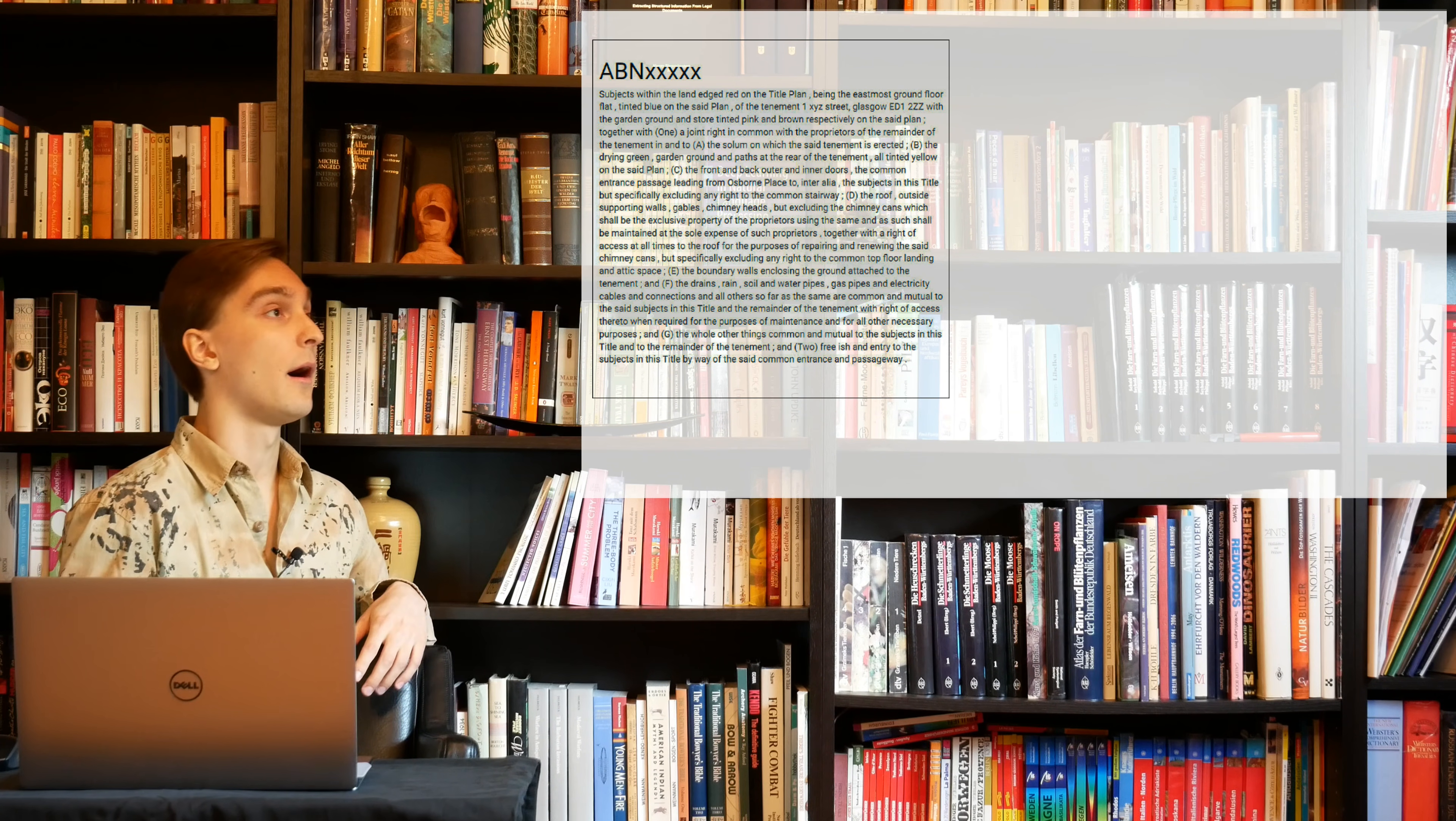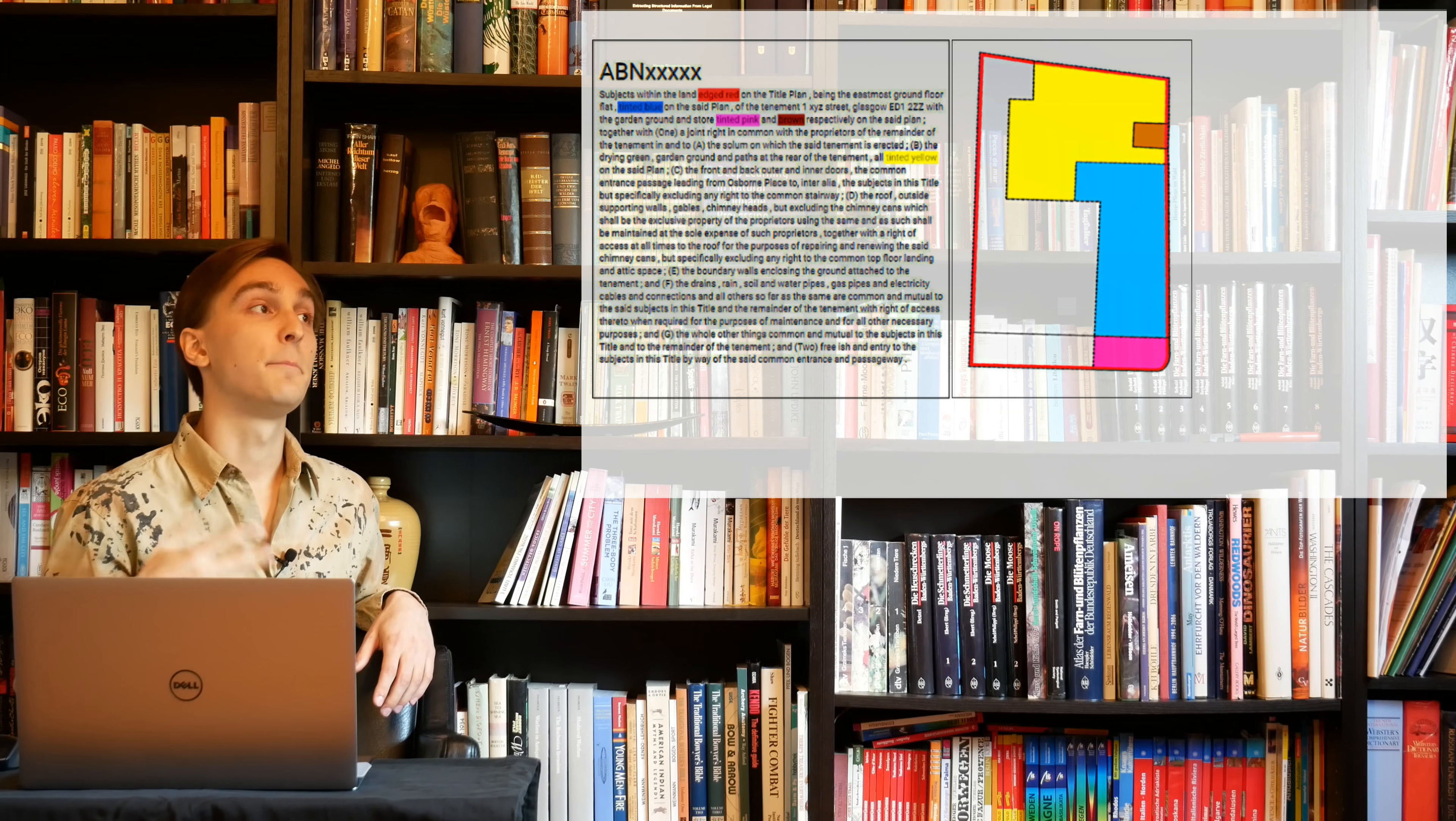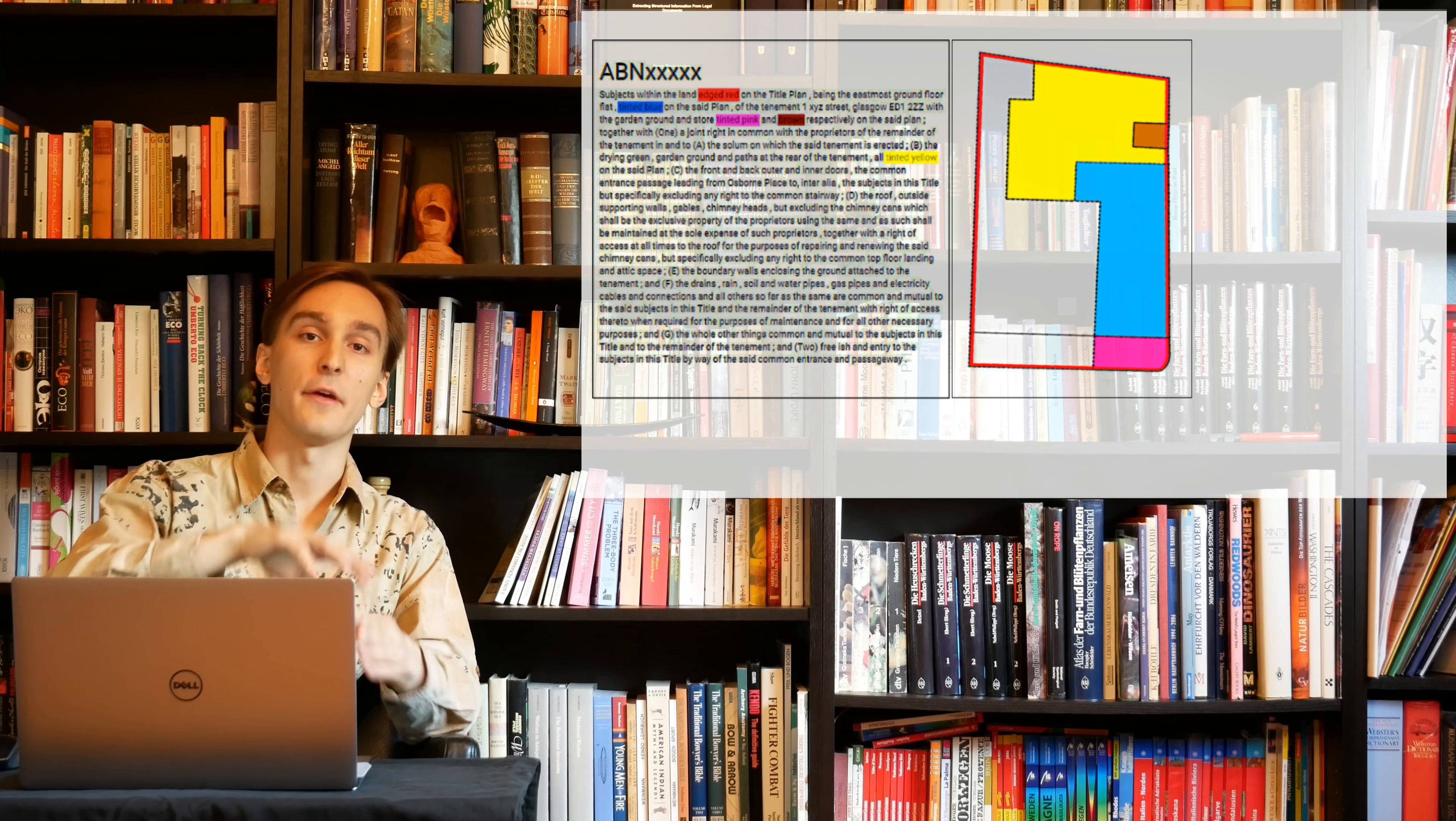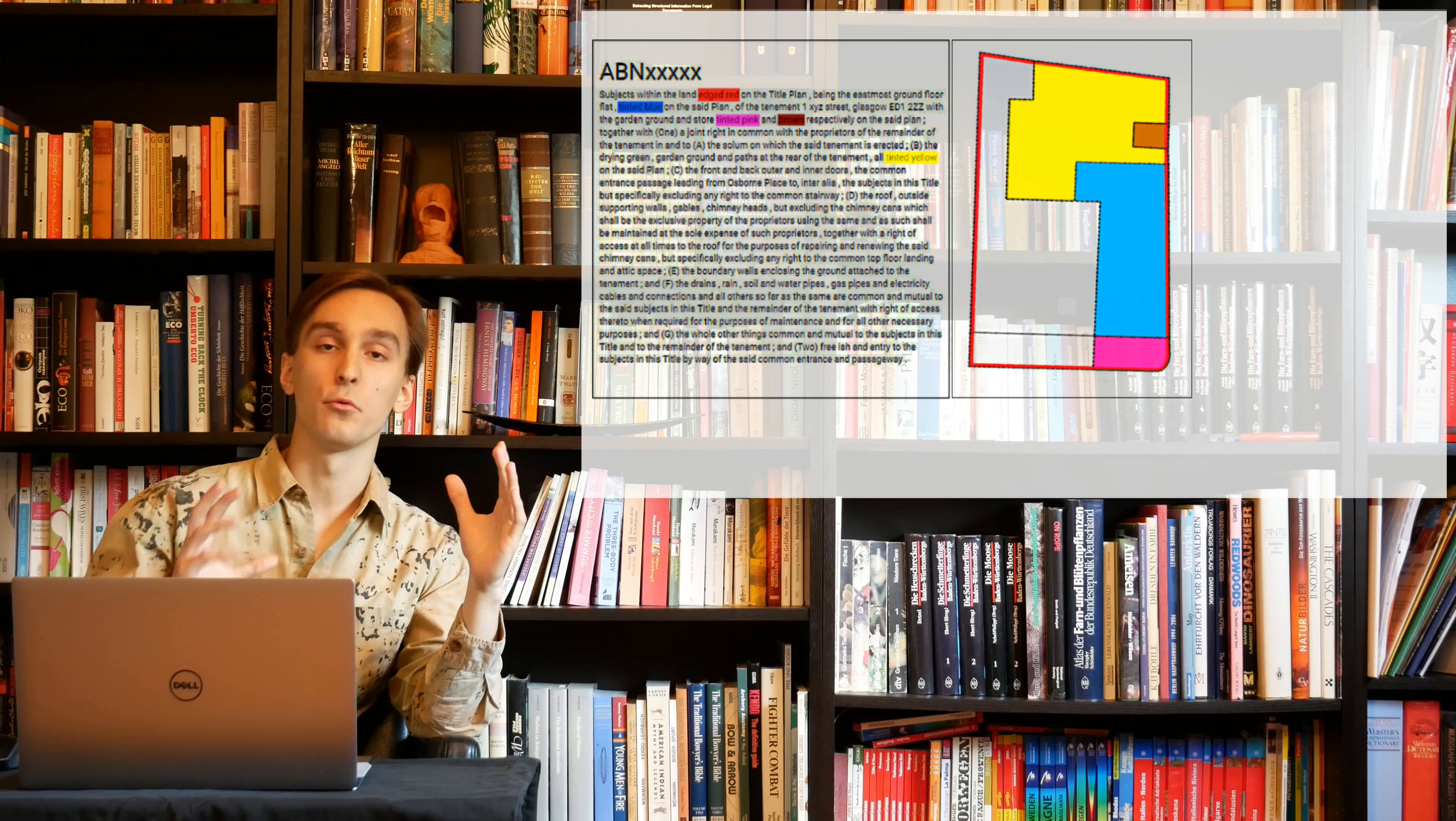A sections in general are accompanied by a map depicting several coloured entities. And these coloured entities are also present within the text in the form of colour-style pairs. So edged red is the boundary or the tenement, the tenement-steading of the property in question, tinted blue is the eastmost ground floor flat, tinted pink and tinted brown is the garden ground and store and tinted yellow in this case are the paths at the rear of the tenement. Now these colours do not only represent these physical entities in the real world, these colours by the same token also represent different types of ownership at a more abstract level. And with this project what ROS is interested in is mapping these colour pairs to the corresponding types of ownership automatically.